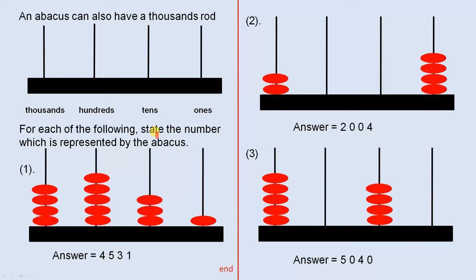For each of the following, state the number which is represented by the abacus. If you've got four beads, there's your four. Five beads, there's the five. Three beads, there's the three. And one bead, there's the one. So it's 4531.